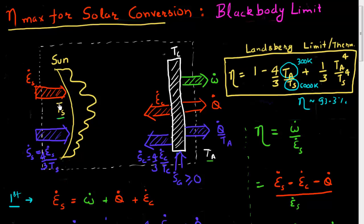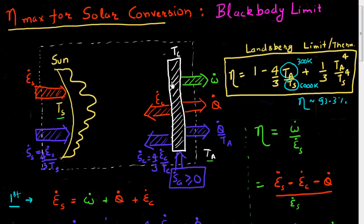The way I calculated this Landsberg limit was by applying the first and second laws of thermodynamics. I equated all the energy fluxes and all the entropy fluxes, which I have labeled in blue over here. Another assumption I made was that, besides the entropy fluxes associated with the incoming solar radiation, the radiation generated from the cell, and the heat given out to the ambient, there is no other process generating entropy. In particular, we assume that when energy from the sun is absorbed by the cell, there is no extra entropy generation.